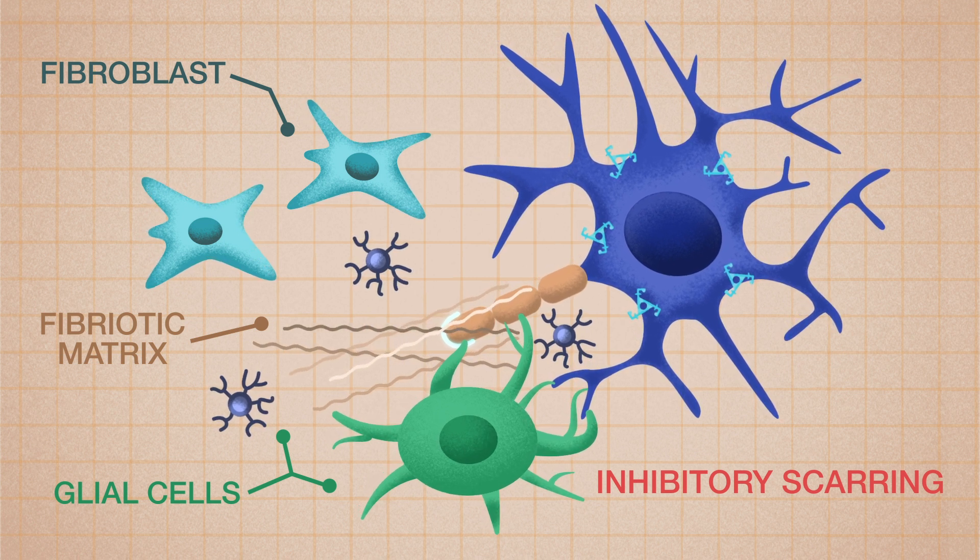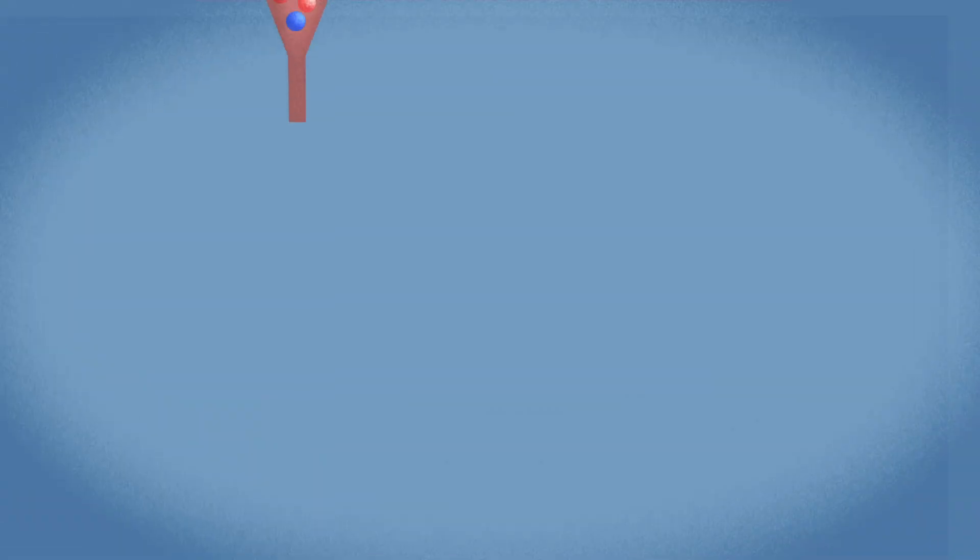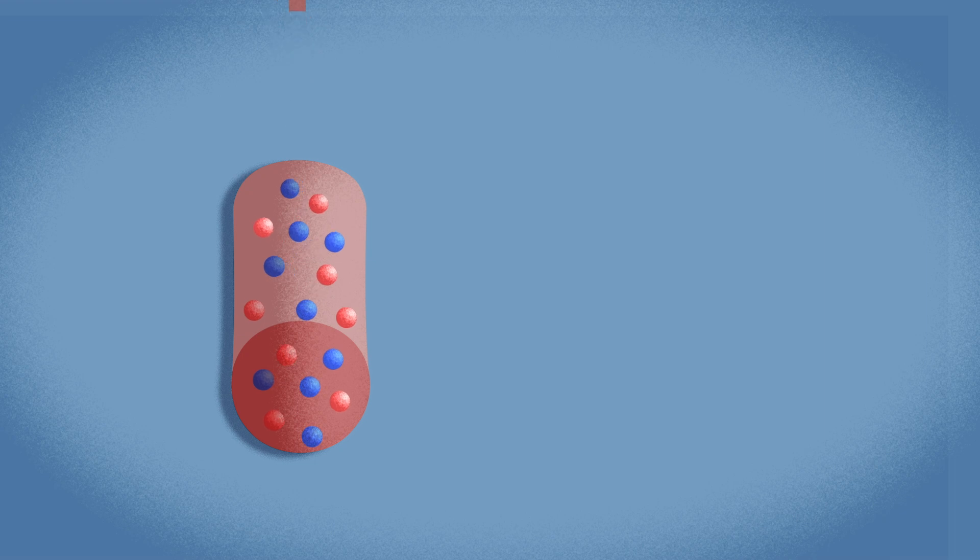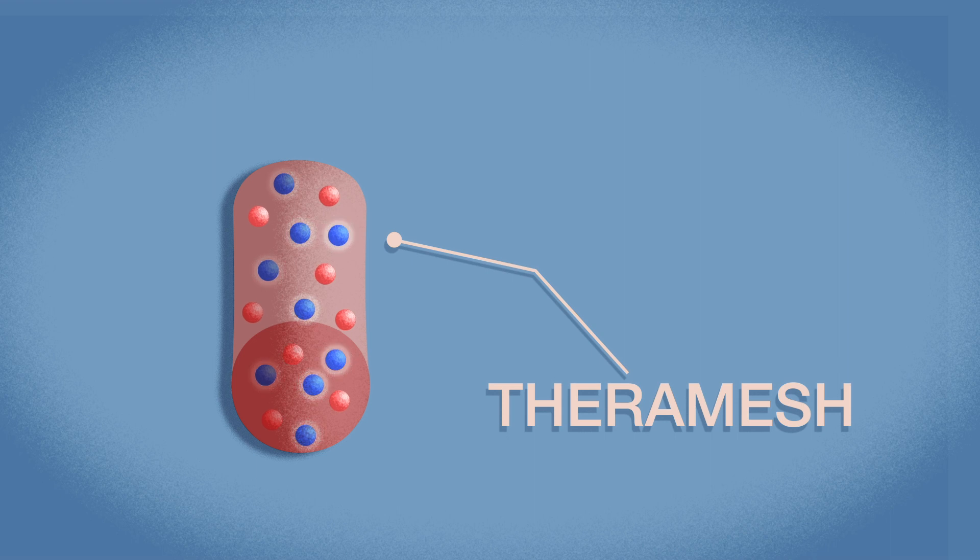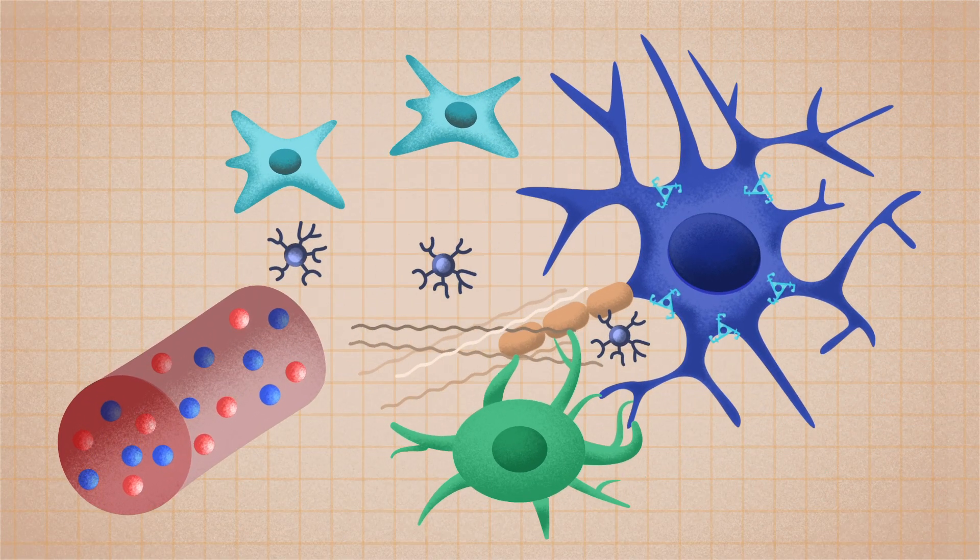So, how can we prevent these two biological processes hampering neural repair? That's where our cutting-edge technology comes in. We're developing a 3D bioprinted TheraMesh that will be implantable and loaded with two kinds of nanocarriers for specific therapies.